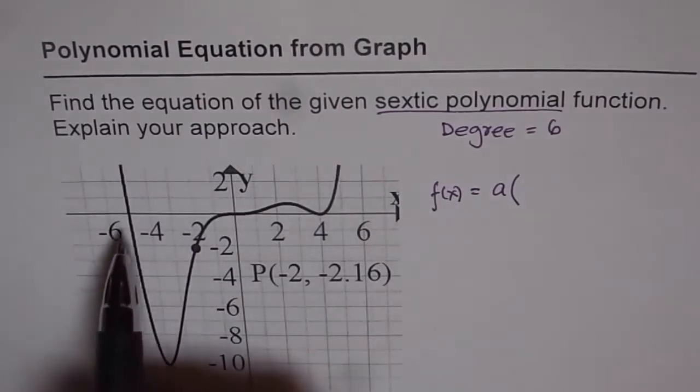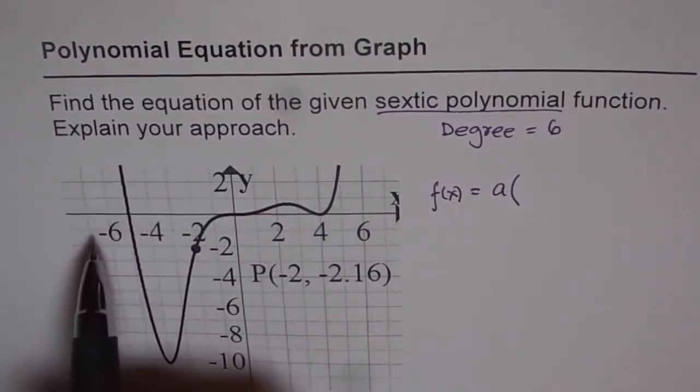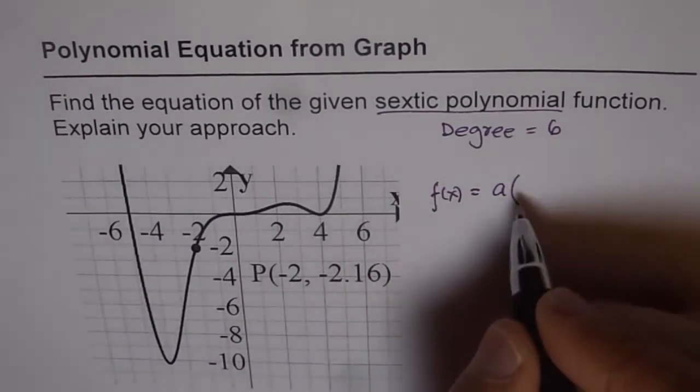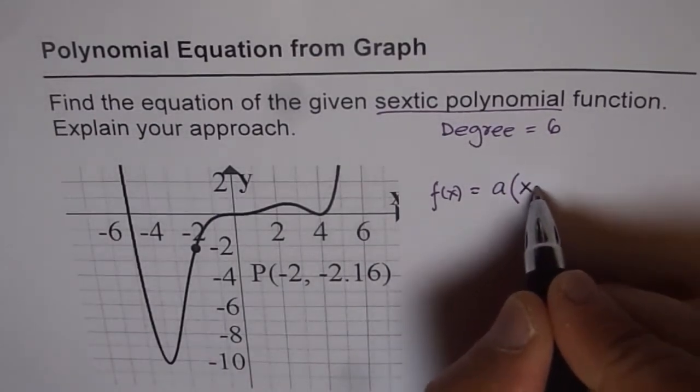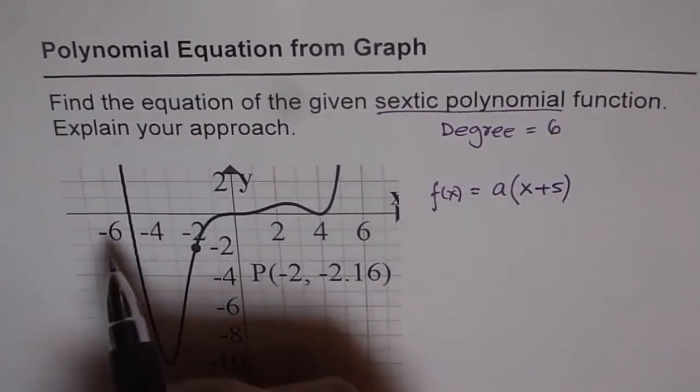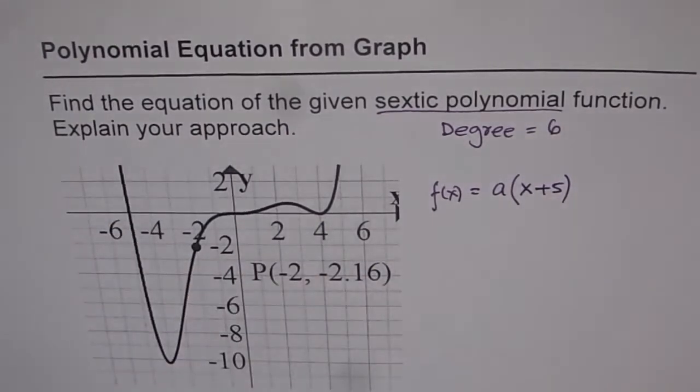Now start seeing at the factors. The very first factor on the left most side seems to be at minus 5. So we will get first factor as x plus 5 and this is a linear zero since the graph crosses in a straight line.